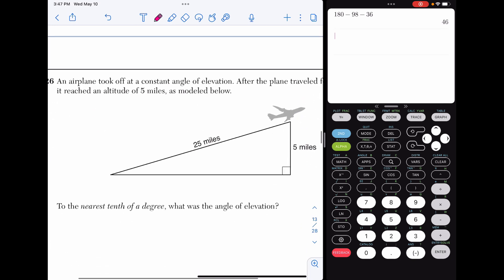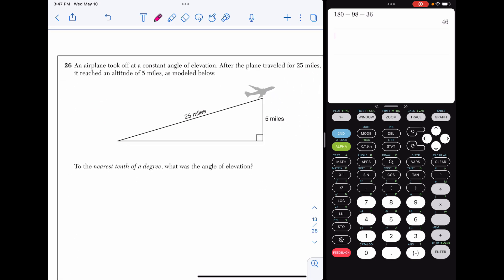Alright, 26. An airplane took off at a constant angle of elevation. After it traveled 25 miles, it reached an altitude of five miles. To the nearest tenth degree, what is the angle of elevation? So I'm going to put an X in here. This is our angle of elevation. And we're going to use SOHCAHTOA. So the opposite side is the five. The adjacent is this blank piece. And the hypotenuse is the 25.